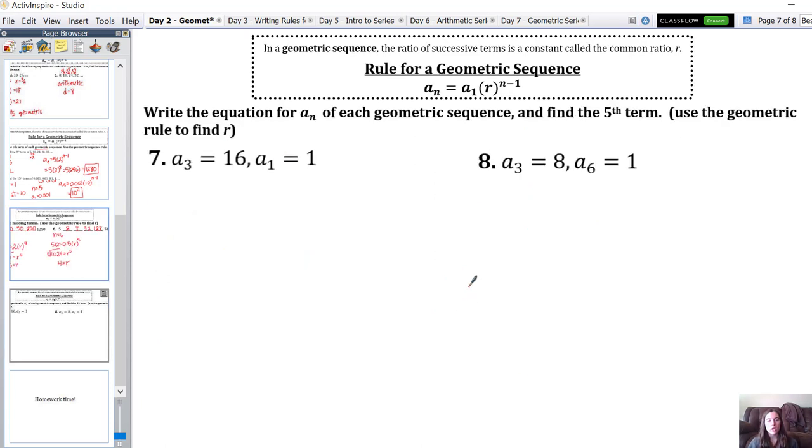Now we need to write an equation for a sub n of each geometric sequence, and then find the 5th term. We know a sub 3 is 16, and a sub 1 is 1. First I need to figure out what r is, and then we will figure out our equation and our 5th term.